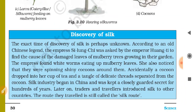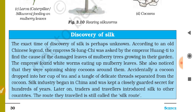How was silk discovered? The exact time of discovery of silk is perhaps unknown. According to an old Chinese legend, the empress Si Longchi was asked by the emperor Wangti to find the cause of damage to the mulberry trees in their garden. The empress found white worms eating up mulberry leaves and noticed they were spinning shiny cocoons around themselves. Accidentally, a cocoon dropped into her cup of tea and a tangle of delicate threads separated from the cocoon. Silk industry began in China and was kept a closely guarded secret for hundreds of years.